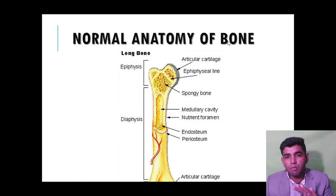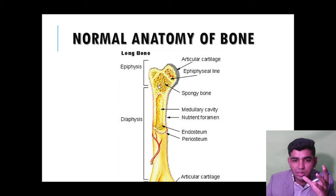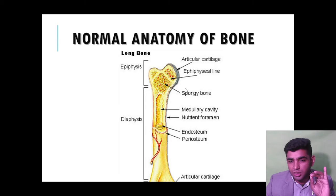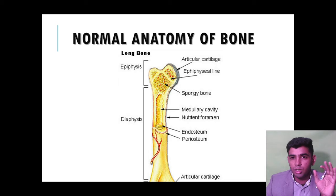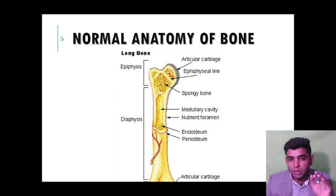Regarding normal bone anatomy: there is articular cartilage, epiphyseal line, epiphysis, and diaphysis. The metaphysis is absent in young adults. In children, the metaphyseal area is present and infection occurs there — which is important for MCQs. In young adults, infection occurs in the epiphyseal area.